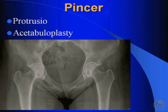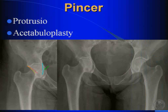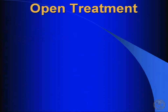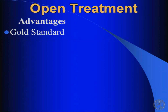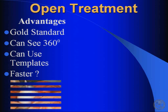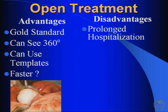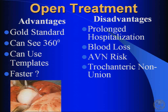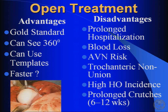You can do this with most degrees of pincer impingement. Here's a patient with protrusio — the center edge angle is 62 degrees — and just by removing some of the lateral and anterolateral head, neck, and acetabulum, this patient was extremely satisfied and went on to have her other hip done arthroscopically. When comparing open versus arthroscopic approaches, the advantage of open is it's the gold standard — you can see all the way around, use templates to help you, and it may be faster per Brian Kelly's study. However, it involves prolonged hospitalization, risk of blood loss, AVN risk, trochanteric nonunion risk, a higher incidence of heterotopic ossification, and prolonged crutch use.